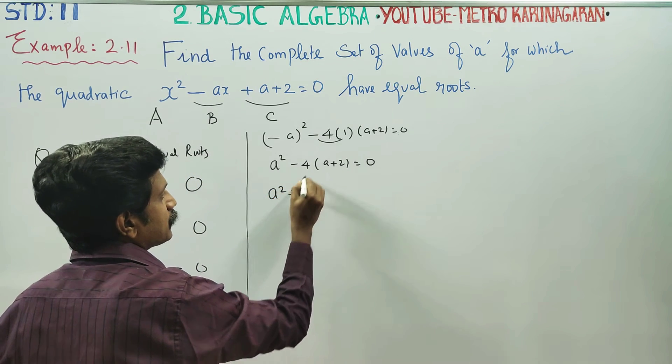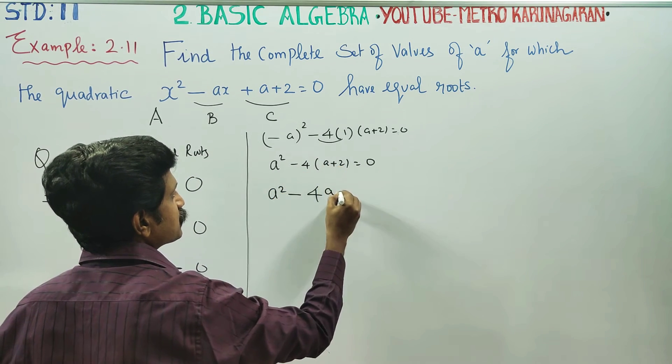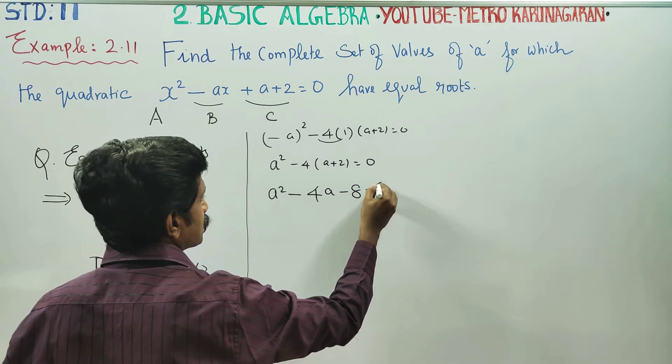A square minus 4A, minus 4 into 2 is minus 8, equal to 0.